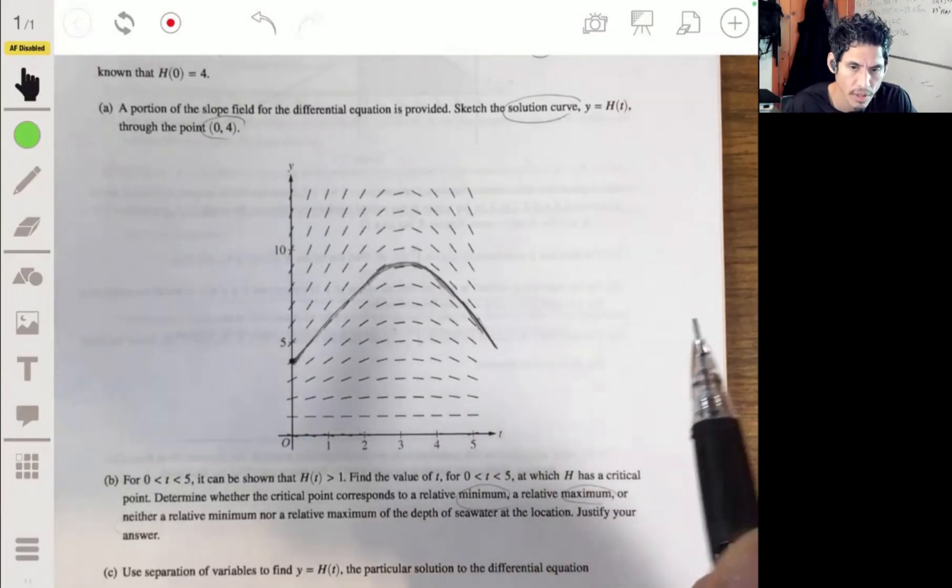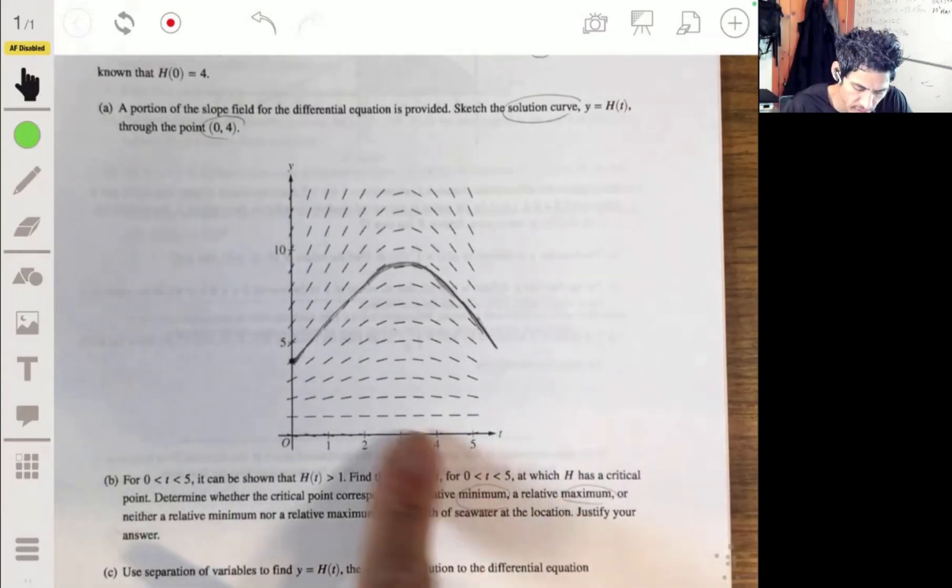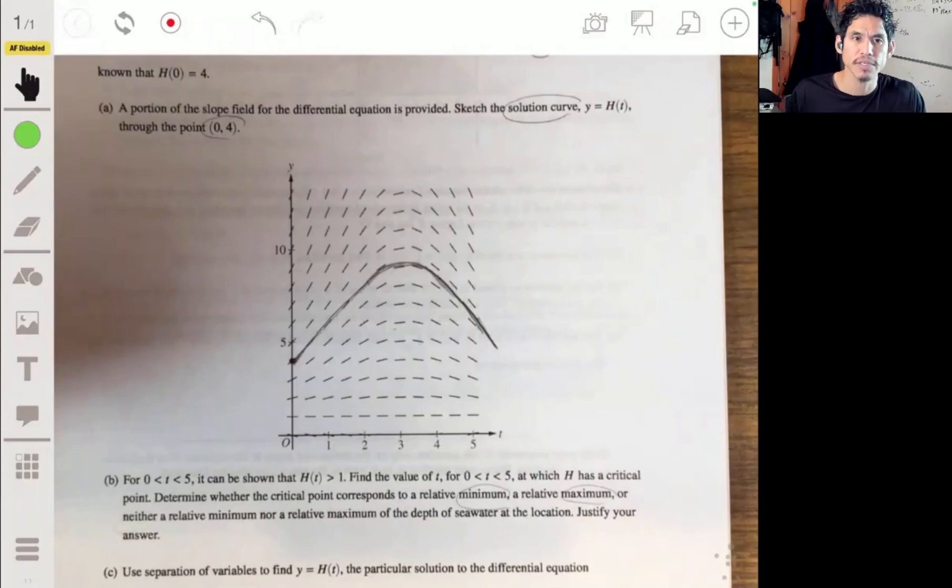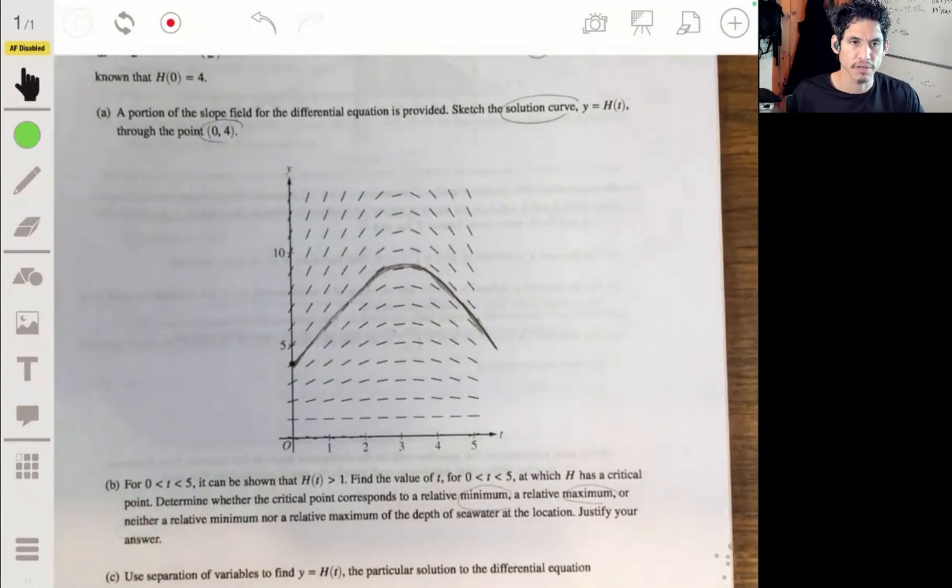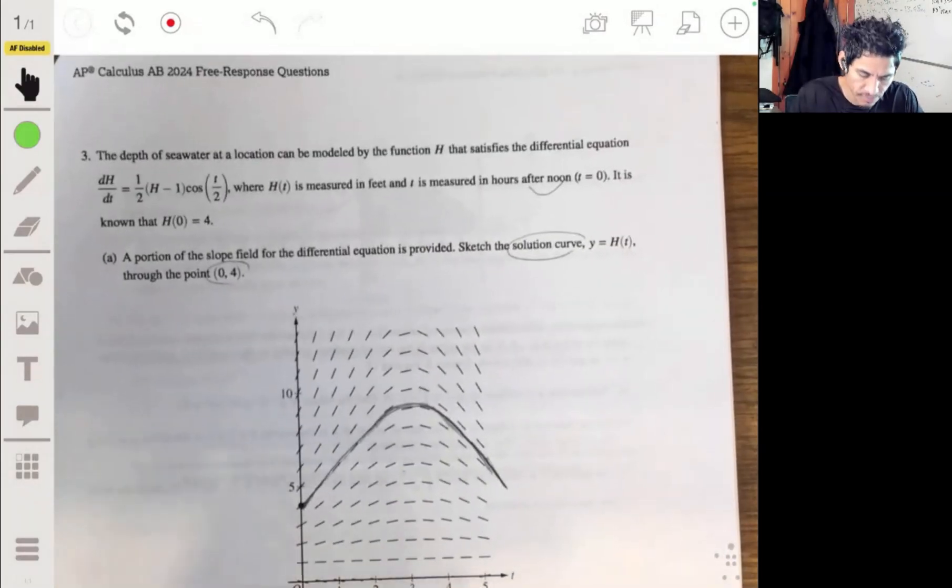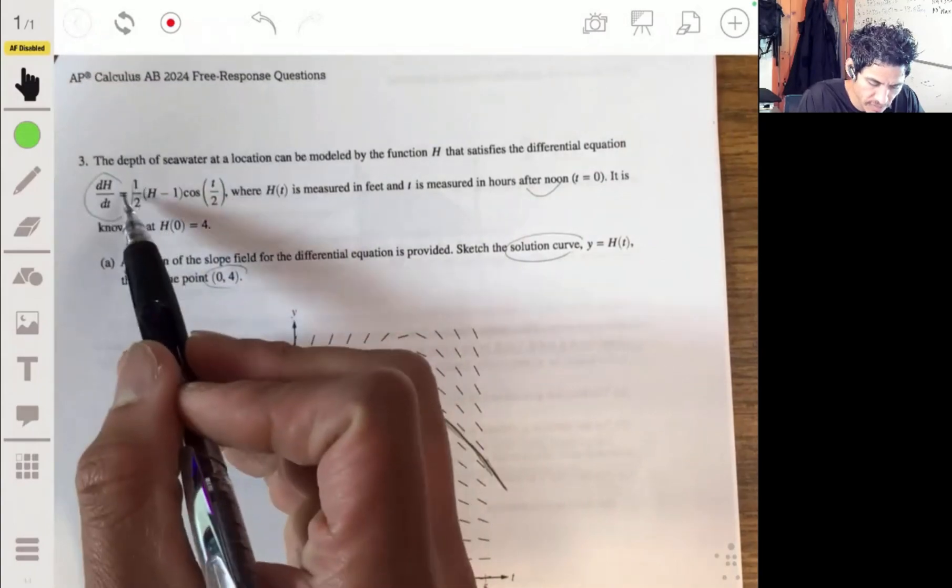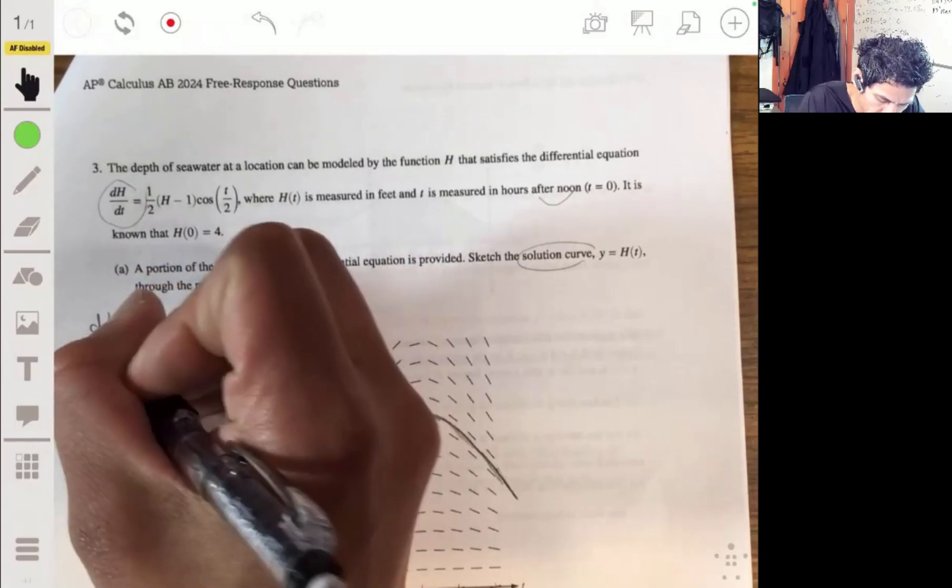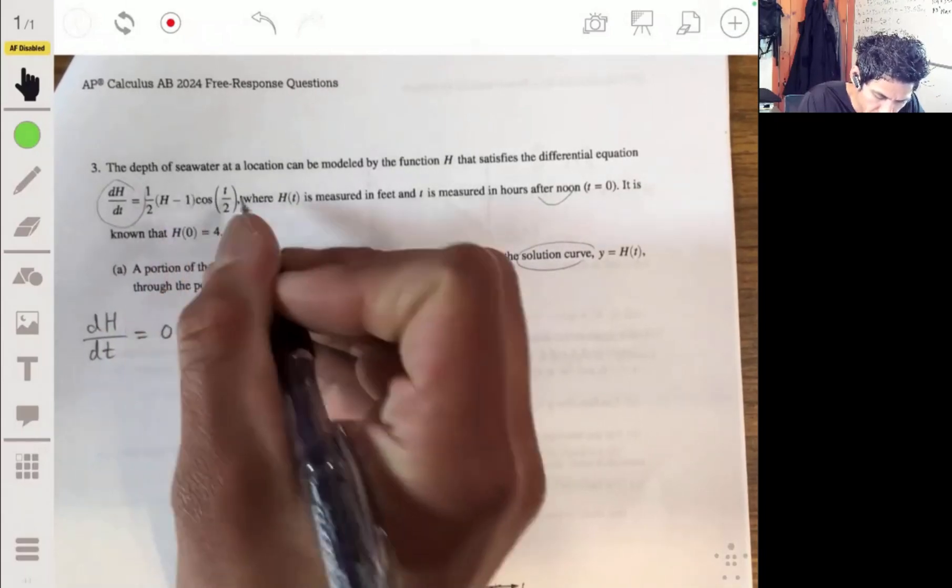Okay, so what this basically involves is if you remember, when we're looking for critical points, we want to set the derivative equal to 0. We have the equation for the derivative here. So we're going to set dh dt equal to 0 and solve for t.